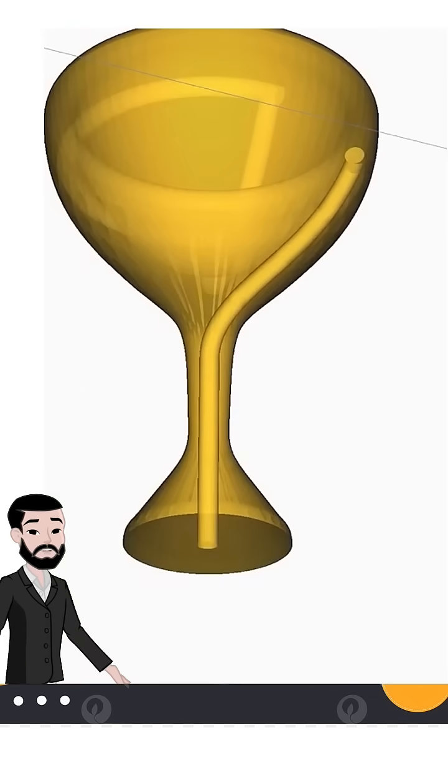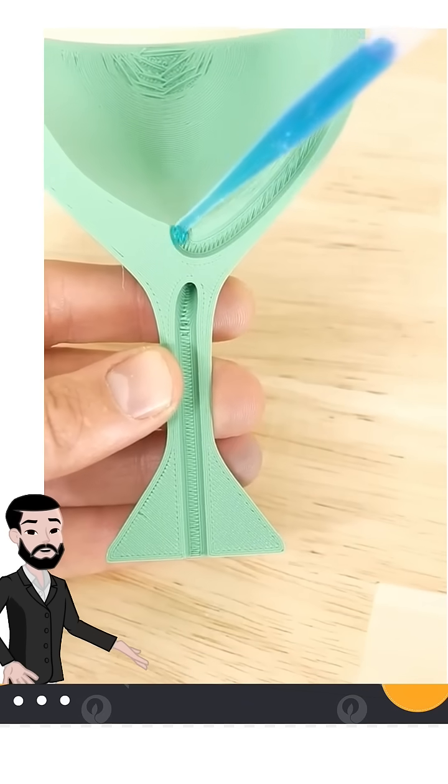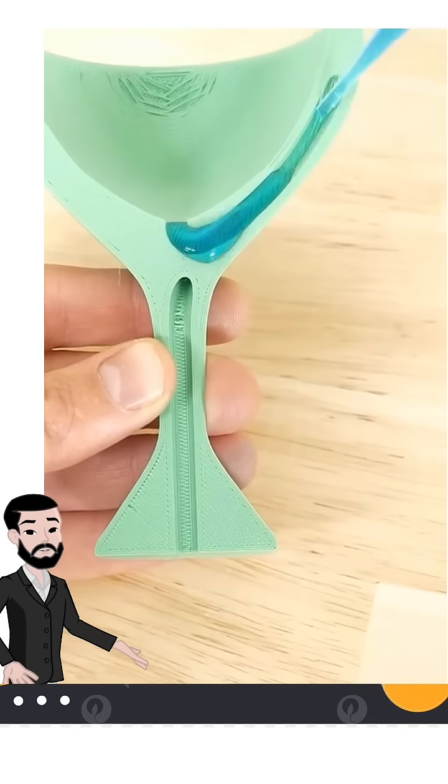Here's where it gets even more devious. A modern version of the Pythagoras Cup hides the siphon inside the walls of the cup. There's no visible tube, but the same principle applies.